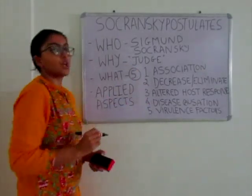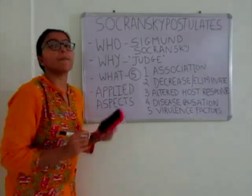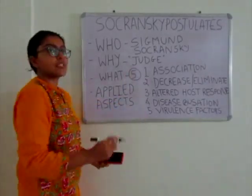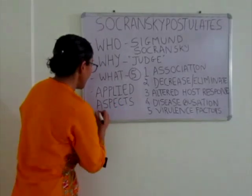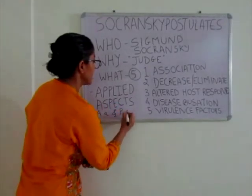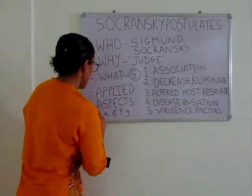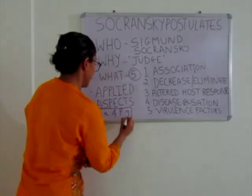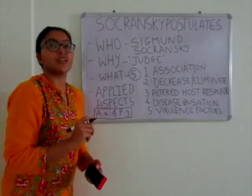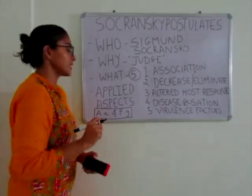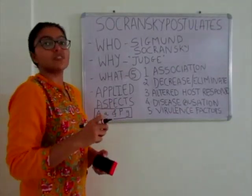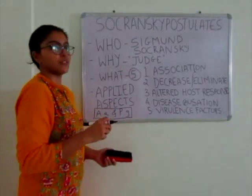Coming to the applied aspects — based on these 5 postulates, it is accepted that only Aggregatibacter actinomycetemcomitans and Porphyromonas gingivalis are accepted as periopathogens, especially Aggregatibacter actinomycetemcomitans in Localised Aggressive Periodontitis and Porphyromonas gingivalis in Chronic Periodontitis.